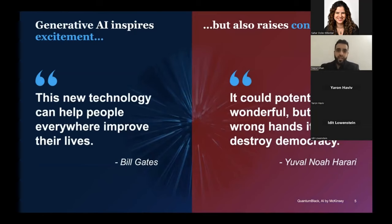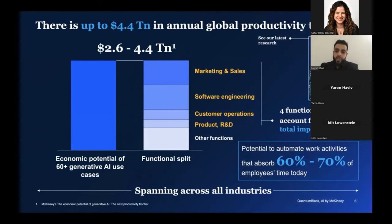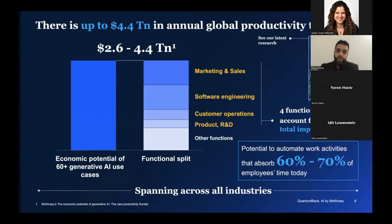With everything, there's excitement on one side, but also balancing the risks — being bold with innovation but also responsible. McKinsey and Quantum Black see up to $4.4 trillion in annual global productivity benefits from this technology, in areas like marketing and sales, software engineering, customer operations, and product R&D. This is not about replacing jobs — it's about giving ourselves superpowers to focus on the creative human tasks, while the boring mundane tasks we can give to these tools.